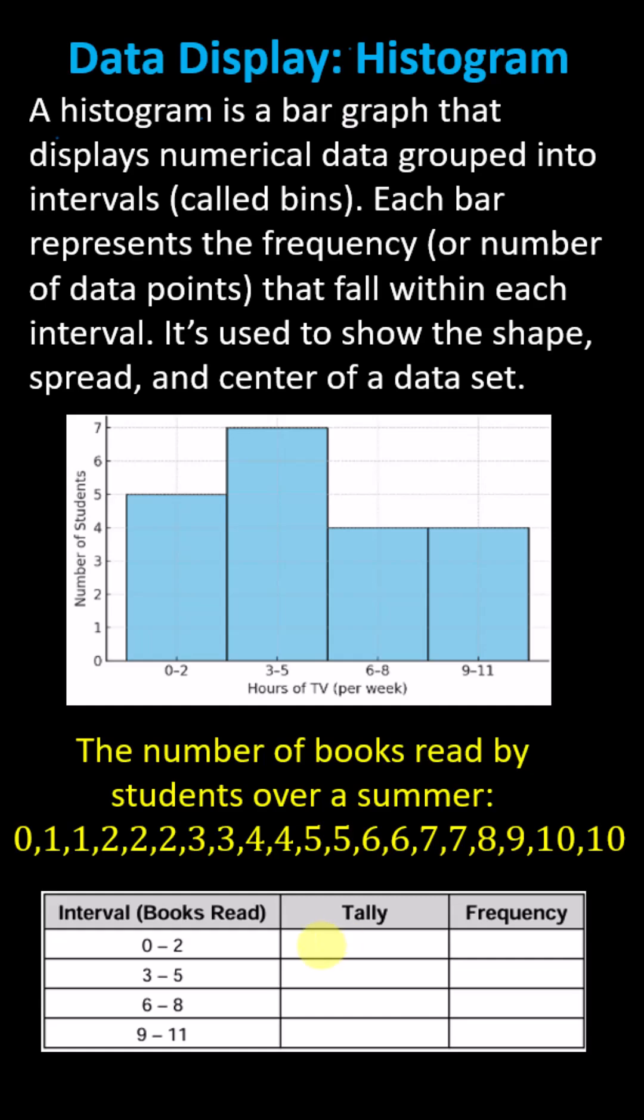And now we'll tally the data to determine the frequency. For the bins 0 to 2, we have one 0, two 1s, and then three 2s. One, two, three. The frequency is 6 for the first bin.